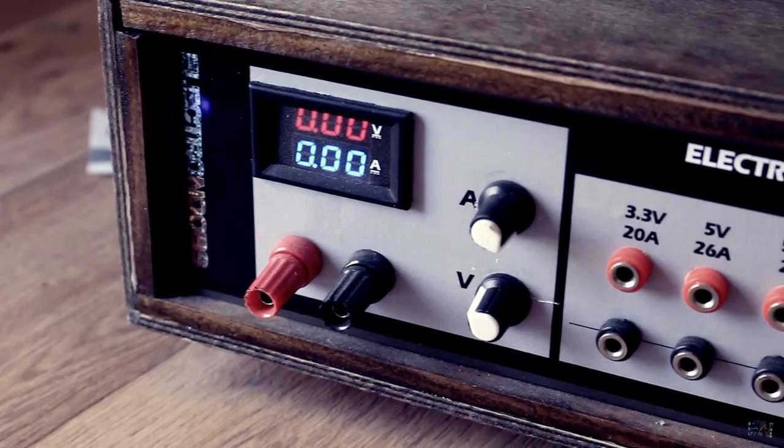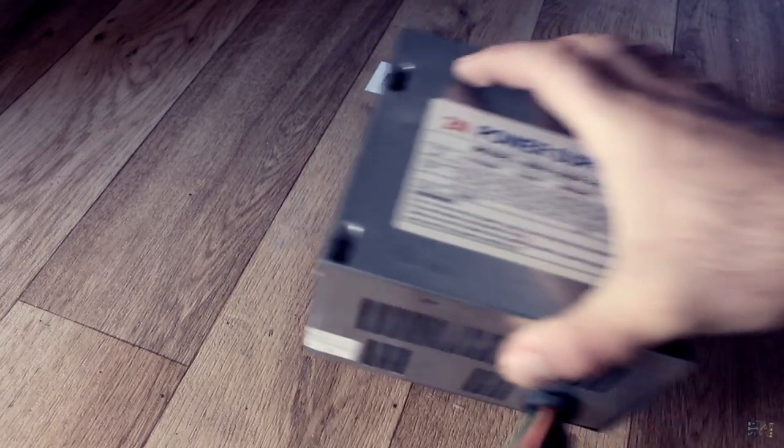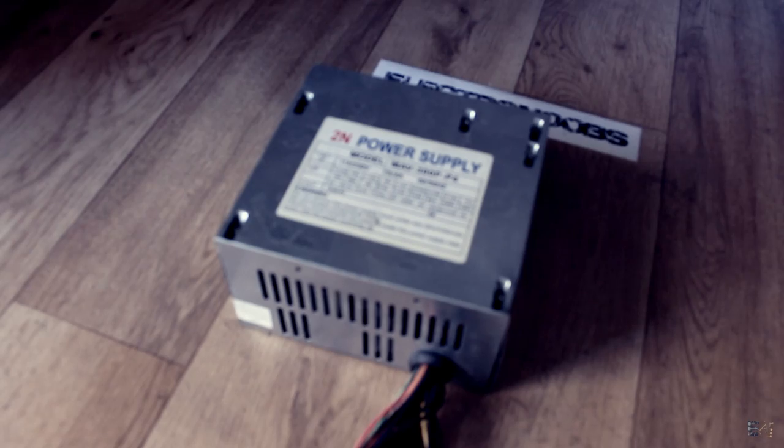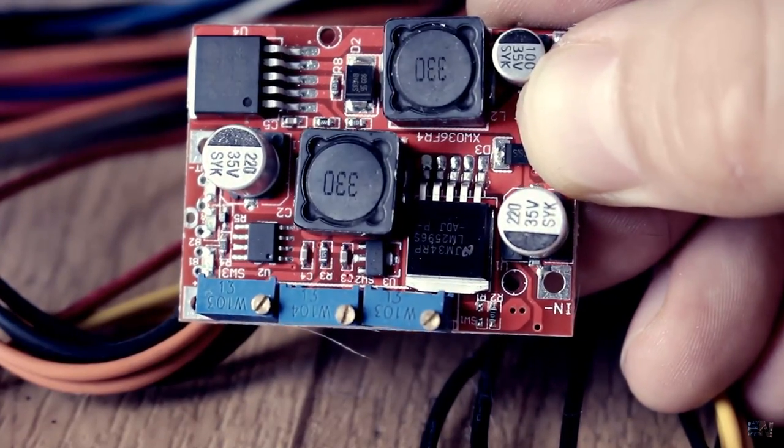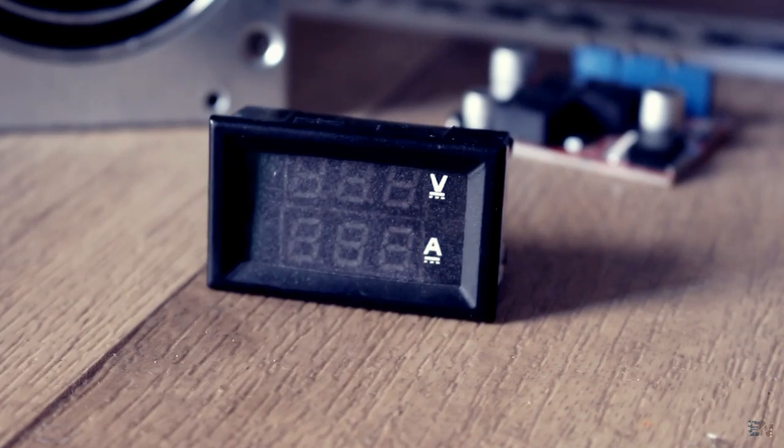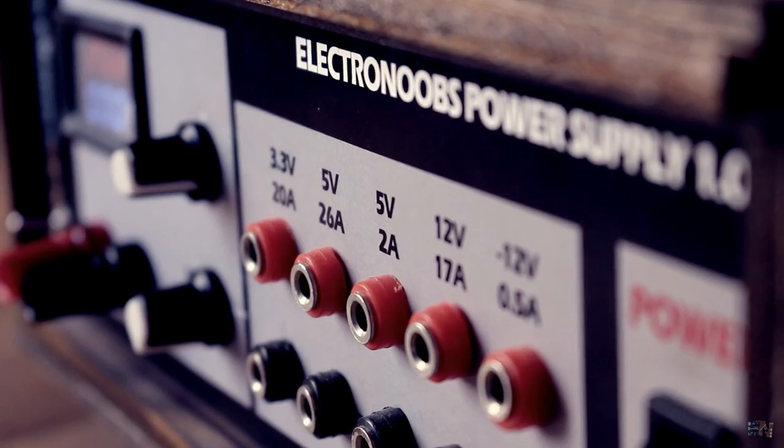This is a homemade vintage look bench power supply. I've made it using an old PC power supply, a voltage converter, a cheap current and voltage meter with display and a few more components. The total price is under $10 and that's amazing.